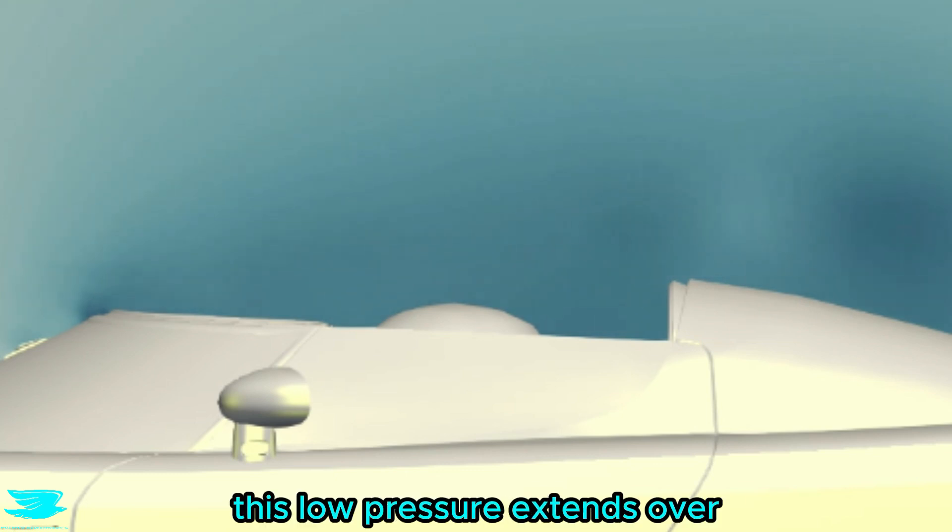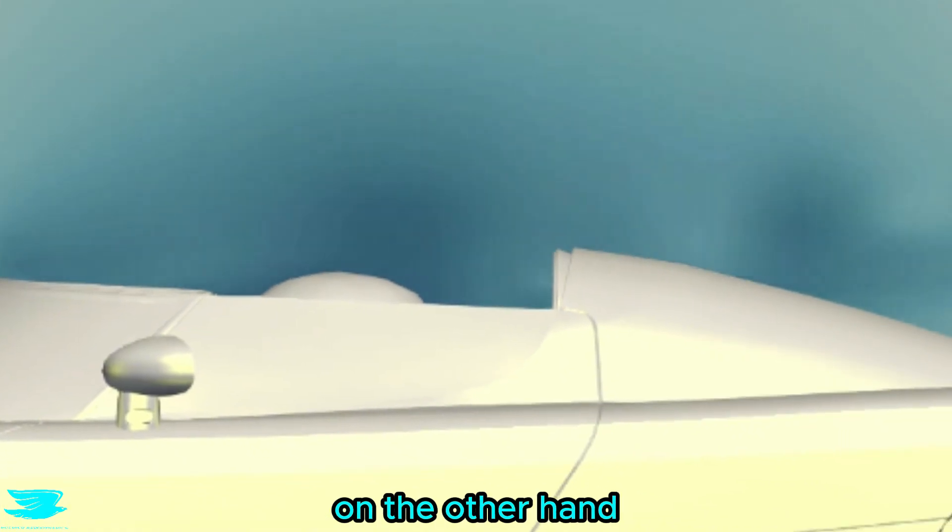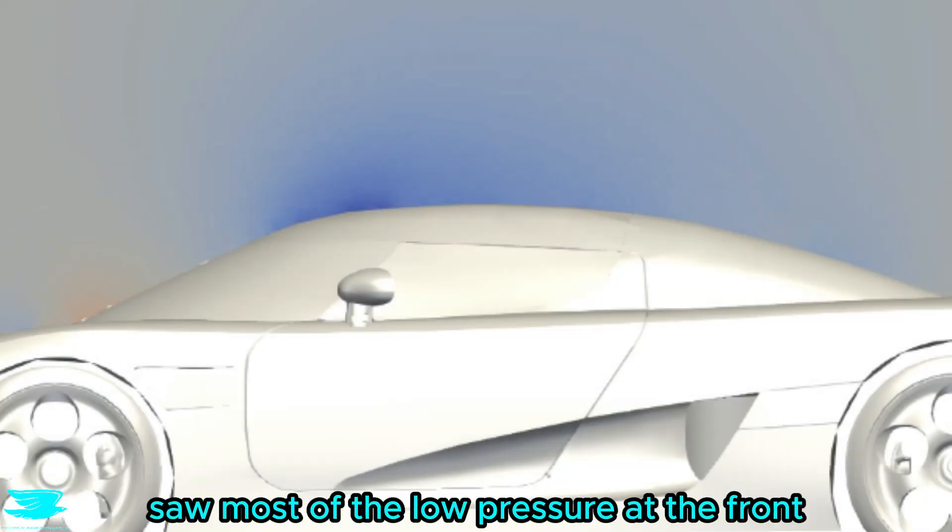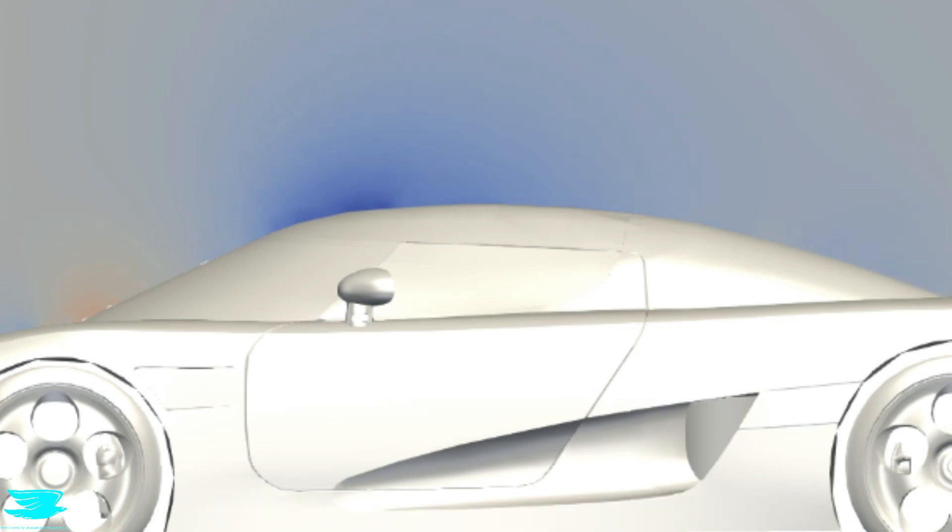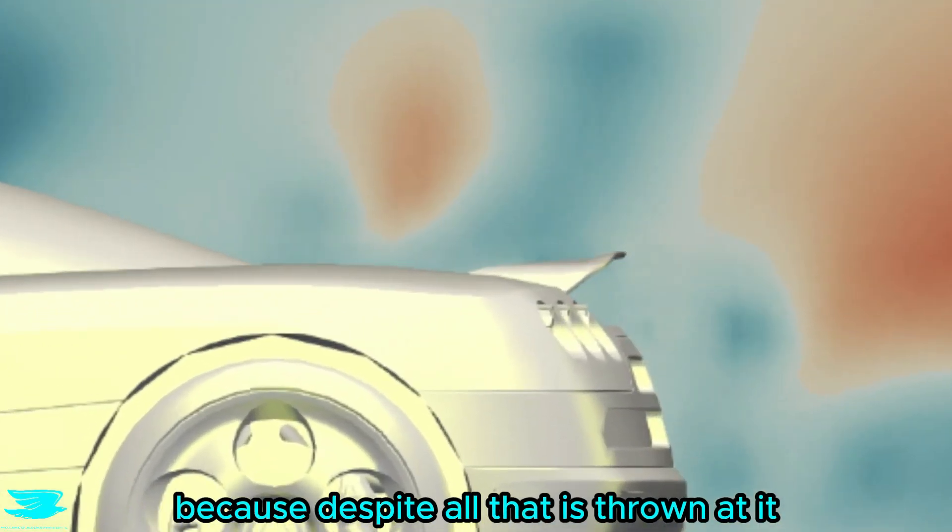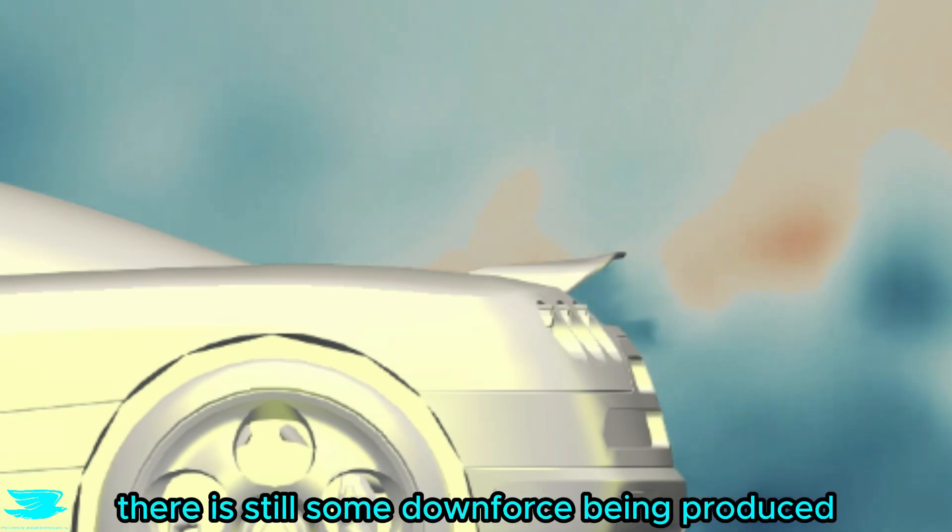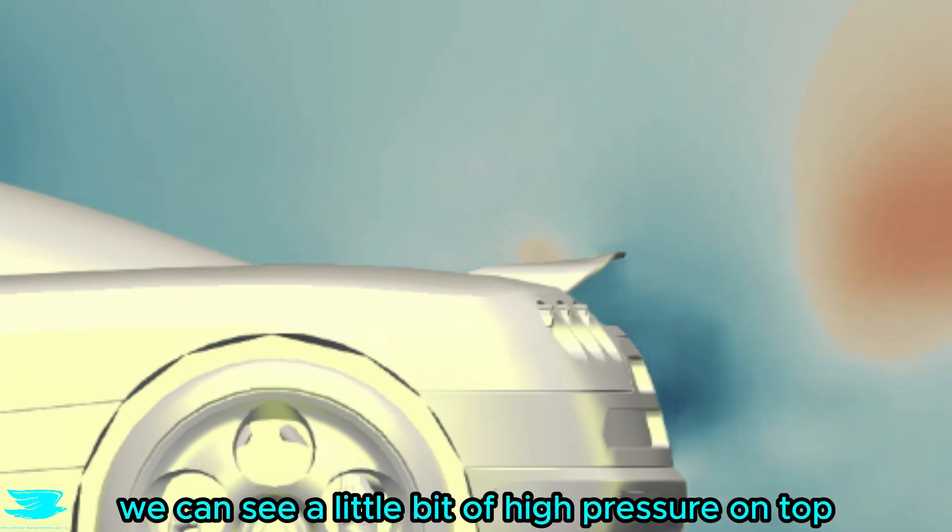What's more, this low pressure extends over the entire roof section. On the other hand, the roofed seg saw most of the low pressure at the front but not too much at the back of the roof relatively speaking. I'm really impressed by the rear wing though, because despite all that is thrown at it, there is still some downforce being produced. We can see a little bit of high pressure on top and low pressure underneath.